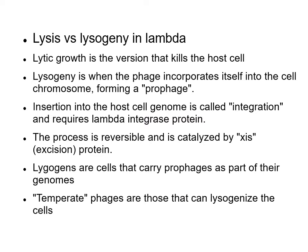Lytic is what kills the cell. Lysogeny is when the phage incorporates itself into the chromosome forming a prophage. That process is called integration and requires a lambda protein called integrase, and it can also be reversed. Temperate is another word for phages that can lysogenize the cell — lambda is an example of a temperate phage.